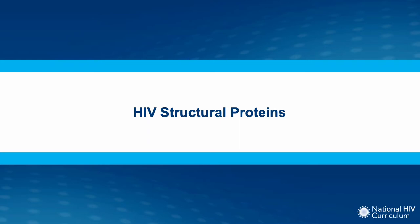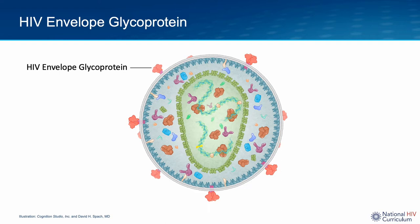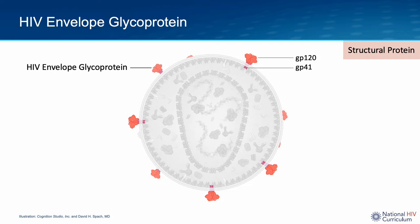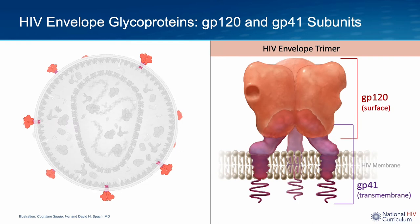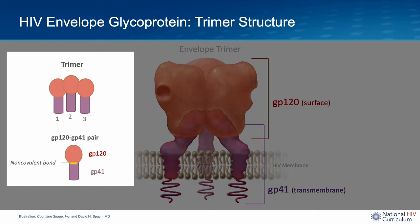Let's take a closer look at each of the HIV structural proteins. The major HIV structural proteins are envelope, matrix, capsid, nucleocapsid, and P6. The outermost structural protein is the HIV envelope glycoprotein. Each HIV particle has about 10 to 15 of the envelope glycoprotein spikes that are randomly arranged like little knobs on the viral surface. Each envelope protein includes the GP120 and GP41 subunits. The GP120 subunit is also referred to as the surface glycoprotein, and the GP41 is the transmembrane or membrane-spanning glycoprotein. The envelope protein has an overarching trimer structure, with each trimer consisting of three GP120-GP41 pairs, and each of these GP120 and GP41 pairs is joined by a non-covalent bond.